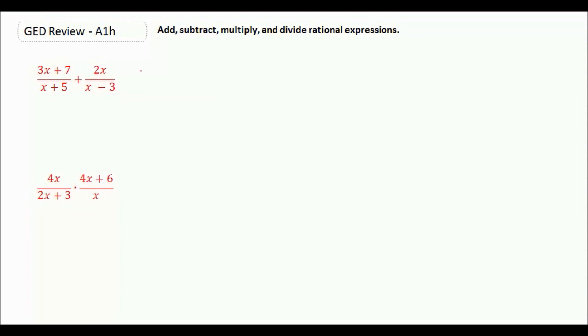In this case, our common denominator is going to be x plus 5 times x minus 3. All you need to do is multiply your two denominators together. However, whatever we do to the denominator, we need to do the numerator.